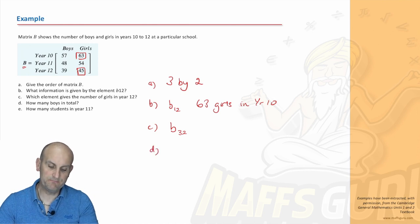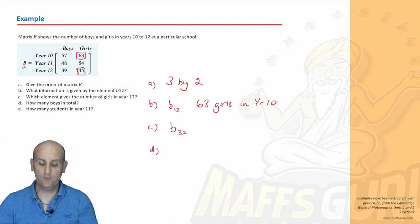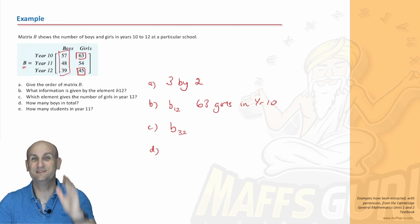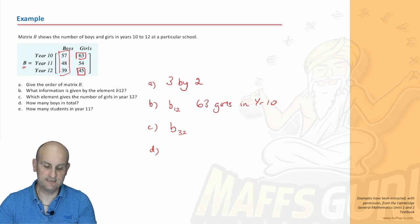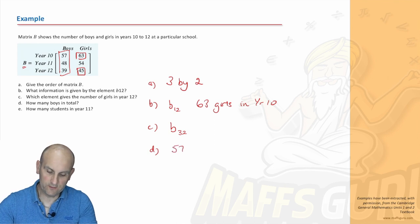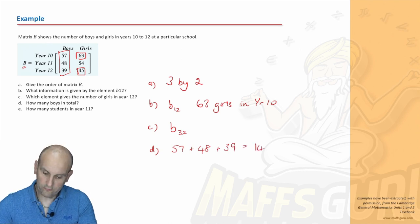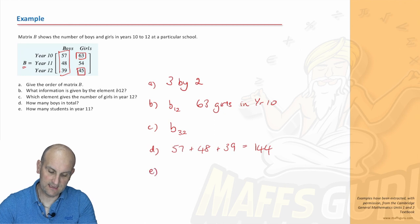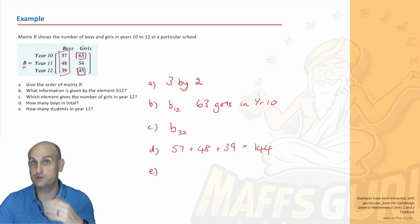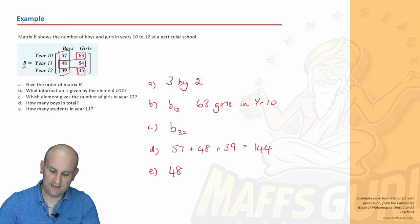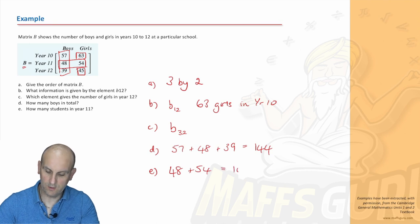Part D. How many boys are there in total? Well, how would we do that? Well, my boys in total would be all of those numbers in the boys column added together. So, we would do 57 plus 48 plus 39, which equals 144. How many students are there in year 11? Again, if I want students in year 11, find the two numbers that are in the year 11 row. So, that would be 48 plus 54, which would give me 102.